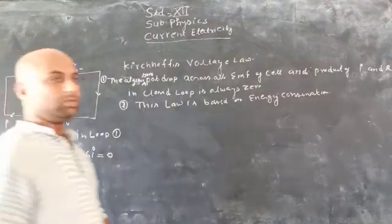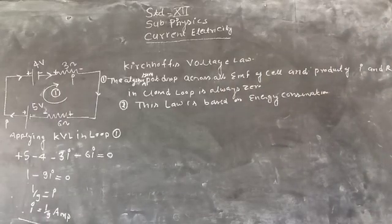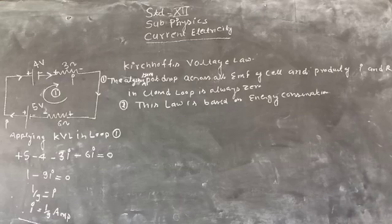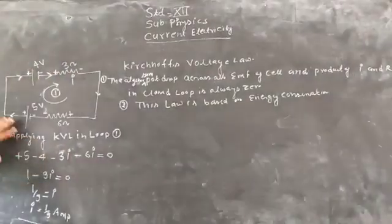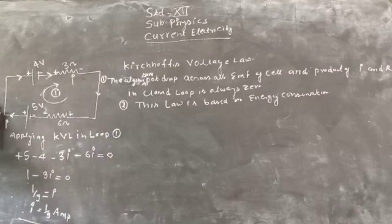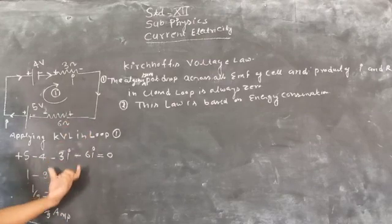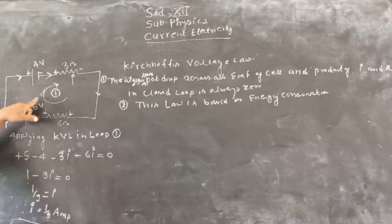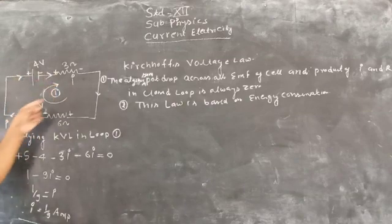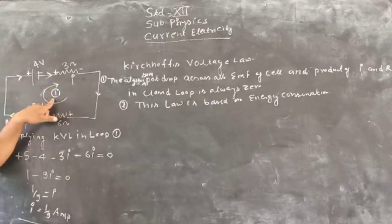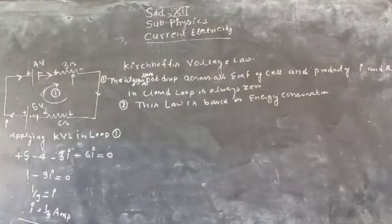So we simply use Kirchhoff's voltage law to solve this circuit. This law is applicable for all basic electrical circuits. This is the basic procedure to solve any circuit problem. This is the direction of rotation. The numbering method is also important because here only one loop is considered, but in other questions there can be 2 or 3 loops.